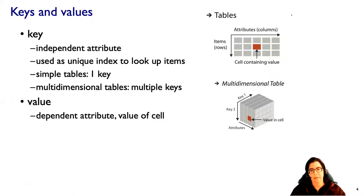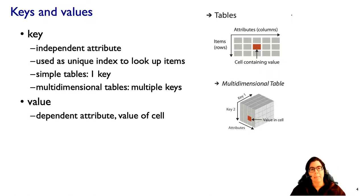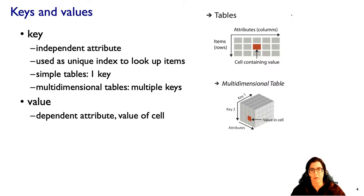An important idea here is that there are different kinds of attributes: key attributes and value attributes. A key attribute we can think of as independent in the language of statistics. In computer science, we use it as a unique index to look up items — like an index in a multi-dimensional array.